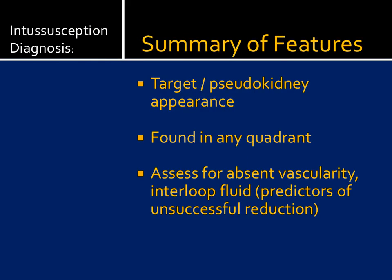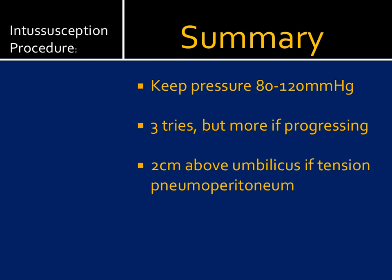In summary, for diagnosis we look for the targetoid or pseudokidney appearance of bowel within bowel, scan all four quadrants, and look for predictors of unsuccessful reduction like absent vascularity or interloop fluid — helpful for counseling parents and surgeons. For the procedure, maintain pressure between 80 and 120 millimeters of mercury. Use the pop-off valve, which connects directly to the insufflation bulb. Try three attempts but do more if making progress; stop if not budging on the third try. For tension pneumoperitoneum, place the 18-gauge angiocath two centimeters above the umbilicus.